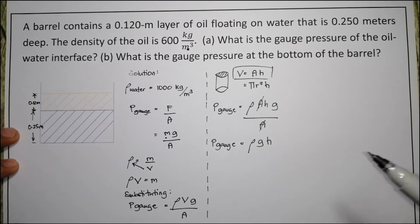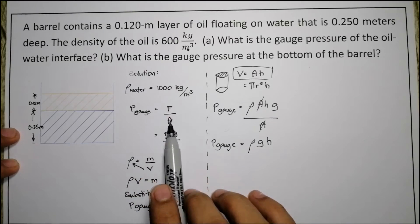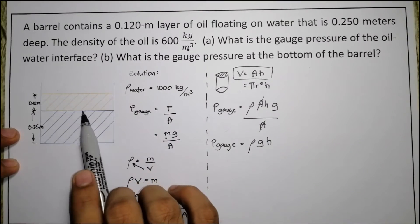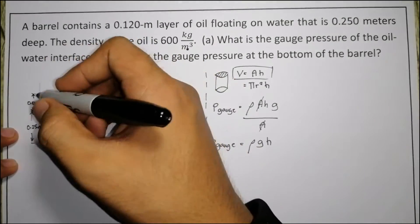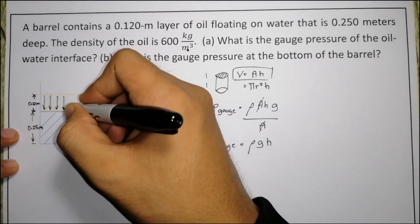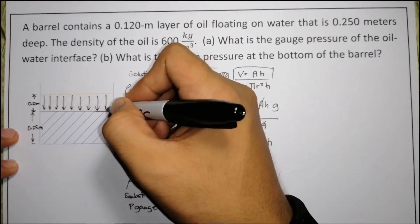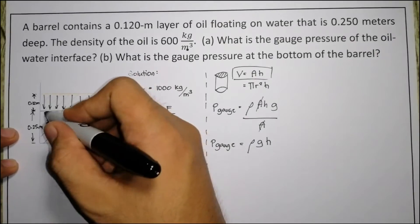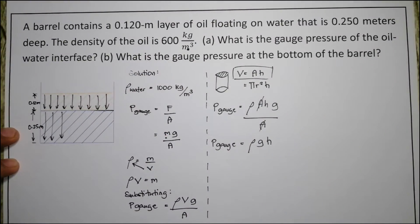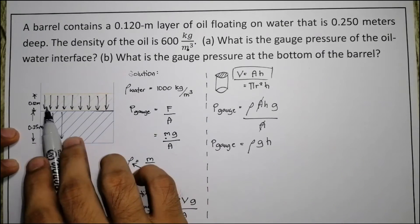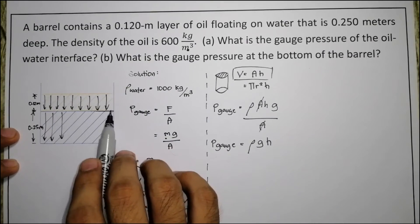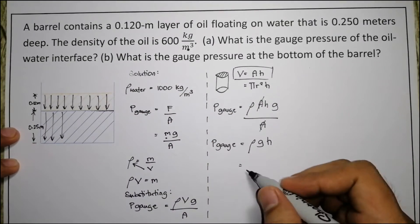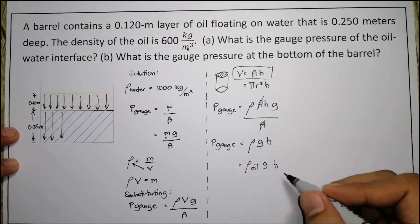Now, returning to the drawing — gauge pressure equals force divided by area. For the oil-water interface, the force acting on it comes from the oil only, not the water, because the water's force is directed downward below the interface. So the gauge pressure at the interface involves only the oil: density of oil times gravity times height of oil.